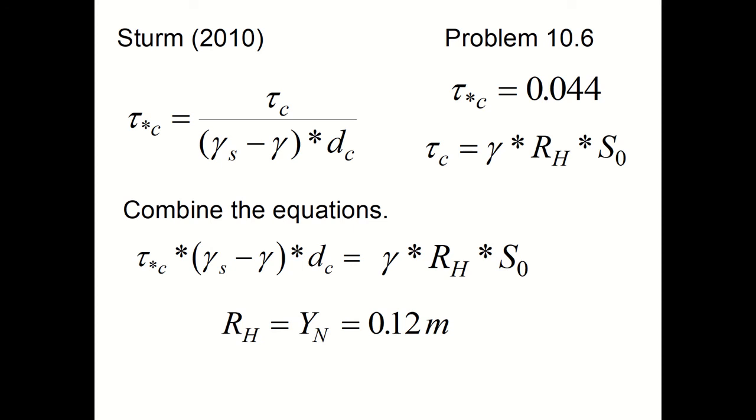We compute the critical shear stress value from gamma times r sub h times s sub 0. And now we can combine those equations into one, so that the critical dimensionless shear stress tau star c times gamma s minus gamma times d sub c equals the specific weight of water times the hydraulic radius times the bottom slope. When you solve that equation, you get that the hydraulic radius, which is also equal to the normal depth for the wide channel, is equal to 0.12 meters.